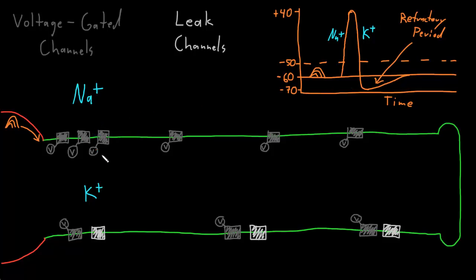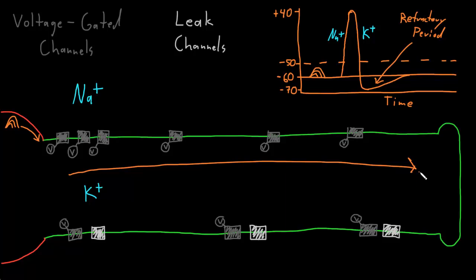The second part is called the relative refractory period. During this time the voltage-gated sodium channels have become functional again and can respond to depolarization. However, the membrane potential is still hyperpolarized — not yet back to the resting potential — so it would take more excitatory input than normal to trigger an action potential. One important effect of the refractory period is that action potentials travel from the trigger zone to the axon terminals and don't turn around and head back the other direction, because the membrane right behind the action potential is refractory and can't be re-triggered.